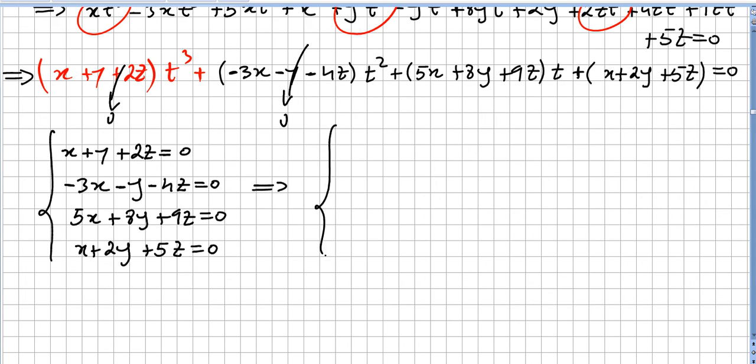And now after some quick calculations, we get x equals 0, y equals 0 and z is also 0. So this means that vectors u, v, and w are linearly independent. Thank you.